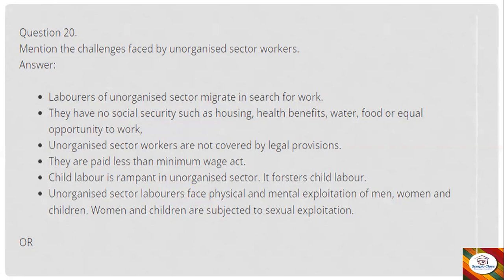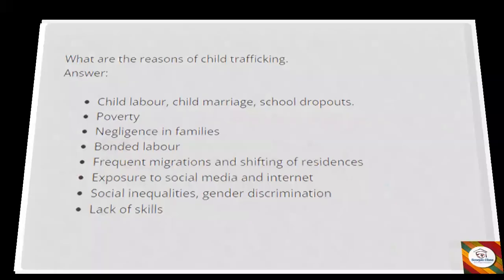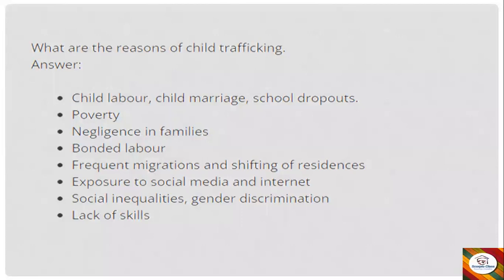Continued Q20A: Unorganized sector laborers face physical and mental exploitation of men, women, and children, and women and children are subjected to sexual exploitation. Question 20 (option B): What are the reasons for child trafficking? Answer: Child labor, child marriage, school dropouts, poverty, negligence in families, bonded labor, frequent migrations, exposure to social media and internet, social inequalities, gender discrimination, and lack of skills.